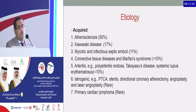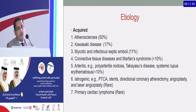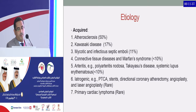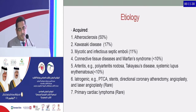Regarding acquired causes, atherosclerosis is the main cause of coronary ectasia in more than 50 percent of cases, followed by Kawasaki disease, mycotic and infectious septic emboli in 11 percent, connective tissue disease and Marfan syndrome in less than 10 percent, arthritis in less than 10 percent, iatrogenic causes during PCI stenting, and primary cardiac lymphoma as a rare cause.